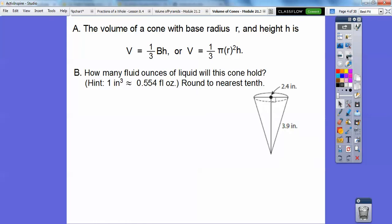So how many fluid ounces of liquid will this cone hold? We have a conversion that one cubic inch equals 0.554 fluid ounces, round to the nearest tenth. So we want to know our answer in fluid ounces. We don't want our answer in terms of inches.